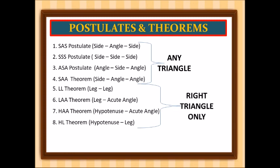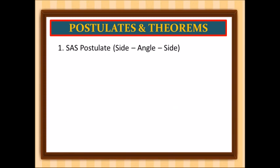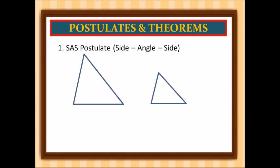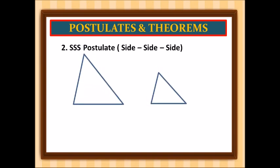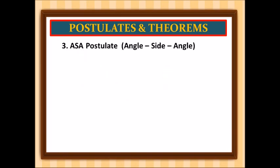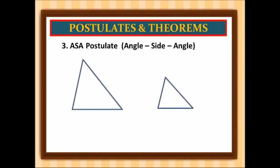For the side-angle-side postulate, we will use this only if the side-angle-side of the first triangle is similar to the side-angle-side of the second triangle. For the side-side-side postulate, we can use this if the three sides of the first triangle are similar to the three sides of the second triangle. For the angle-side-angle postulate, we can use this only if the angle-side-angle of the first triangle is similar to the angle-side-angle of the second triangle.